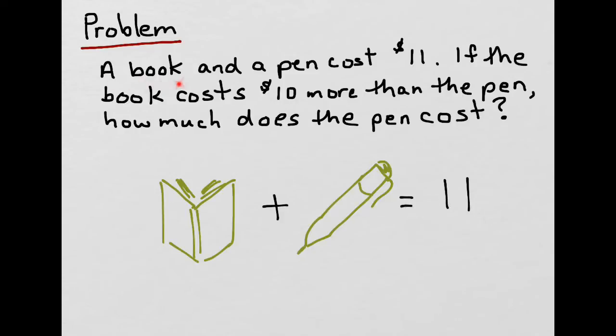And that makes sense, given the first sentence there. Then they look at the second sentence here to see that the book costs $10 more than the pen. And so what instinctively you do is you say, well, if that's $10 for the book and $1 for the pen, that equals $11, therefore the pen must be $1.